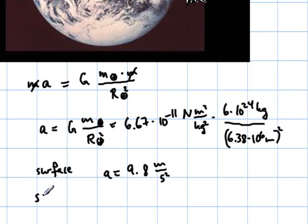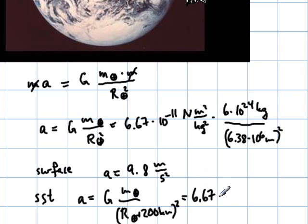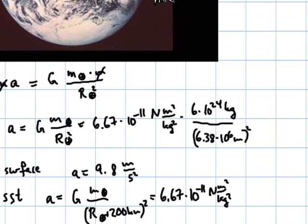In space shuttle territory, we would come up with a equals G times m of the Earth, divided by radius of the Earth plus 200 kilometers squared. So, that equals all the stuff that's up there, 6.67 times 10 to the negative 11 Newton meters squared per kilogram squared. And I need more space.